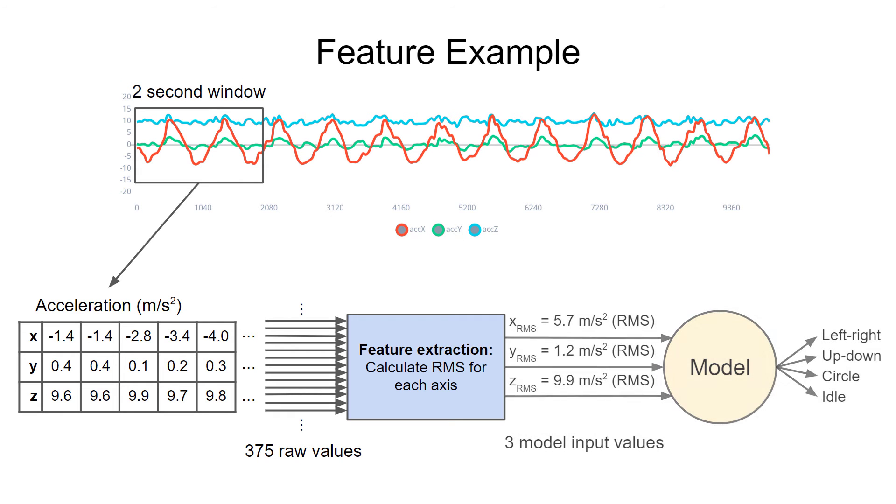We're back to having only three dimensions as the input for our model, and they take into account two seconds of data. One thing you might want to do is filter out the mean of each set of data before calculating the root mean square so that gravity is taken out of the equation.